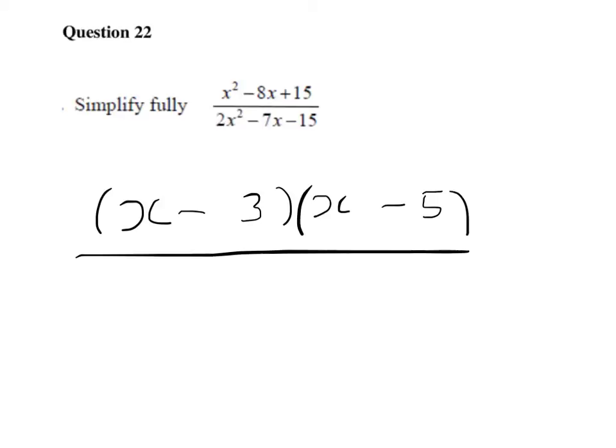Now at the bottom, the only way we can get 2x squared is if we have a 2x times an x, an x rather. And we need factors again of 15. So factors of 15, that when we combine it with the 2x and the x, give us a minus 7x.